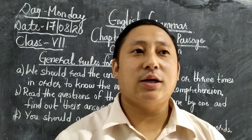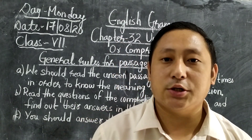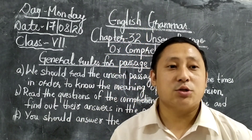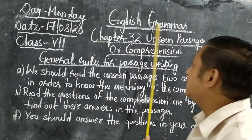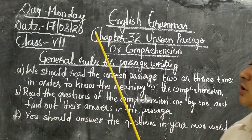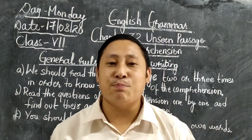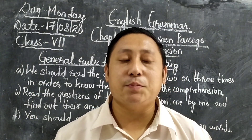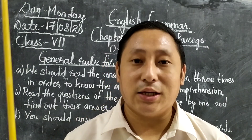Good morning, class 7 students. I hope you all are fine and doing good. Today we are going to do English grammar chapter 32: Unseen Passages. Now today we are going to learn about the Unseen Passages because this is very important for you — it will come in your test, in the exam, as well as in your board exam.